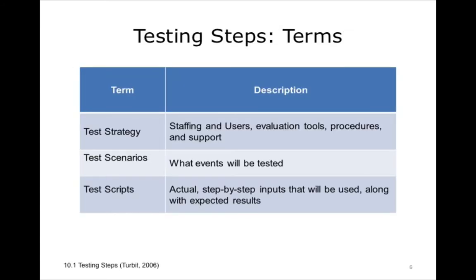Here are three terms you should be familiar with related to UAT. First, test strategy: you will need to devise a test strategy, which includes who will be involved, what special equipment or software will be needed, what procedures will be followed, and what other support mechanisms will be needed to ensure successful testing. Second, test scenarios: you will need to decide what events will need to be tested. Third, test scripts: once you have decided on the events to be tested, you will need to develop step-by-step instructions, including specific inputs that will be used for each test, as well as the expected results.